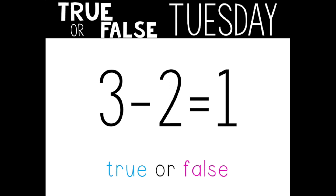Equation number three. True or false? Three minus two equals one. Show me with your thumbs. Great job! Three minus two equals one — that is true. Tell your grown-up how you knew.